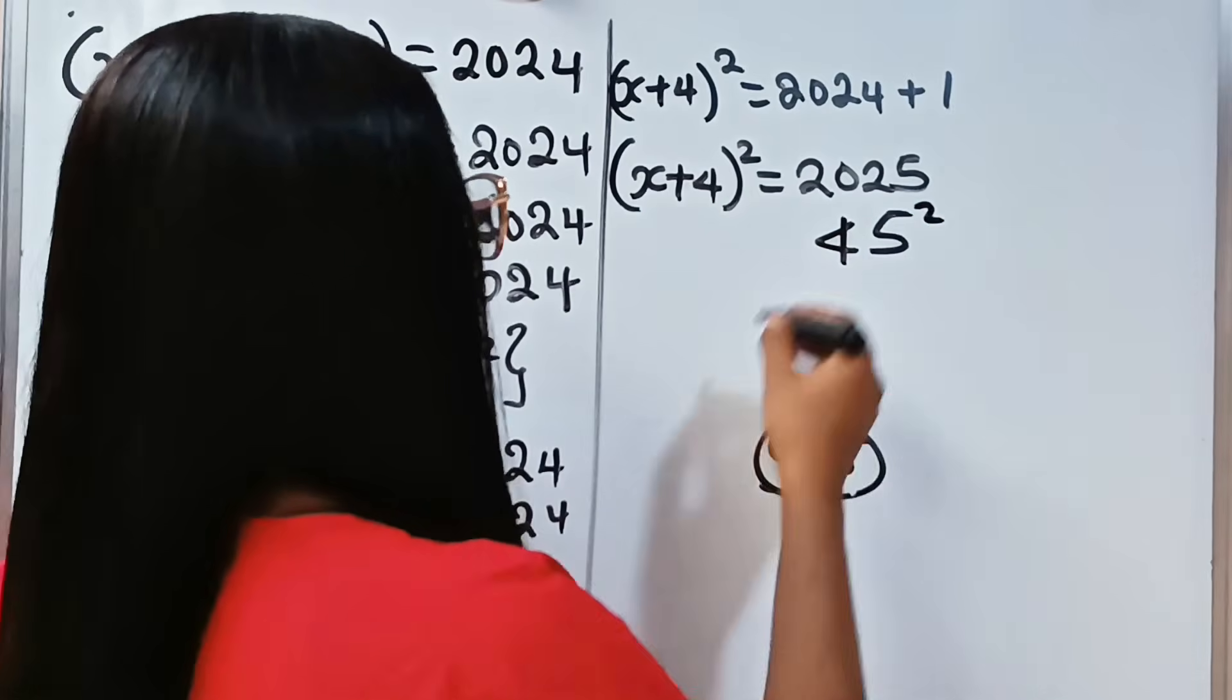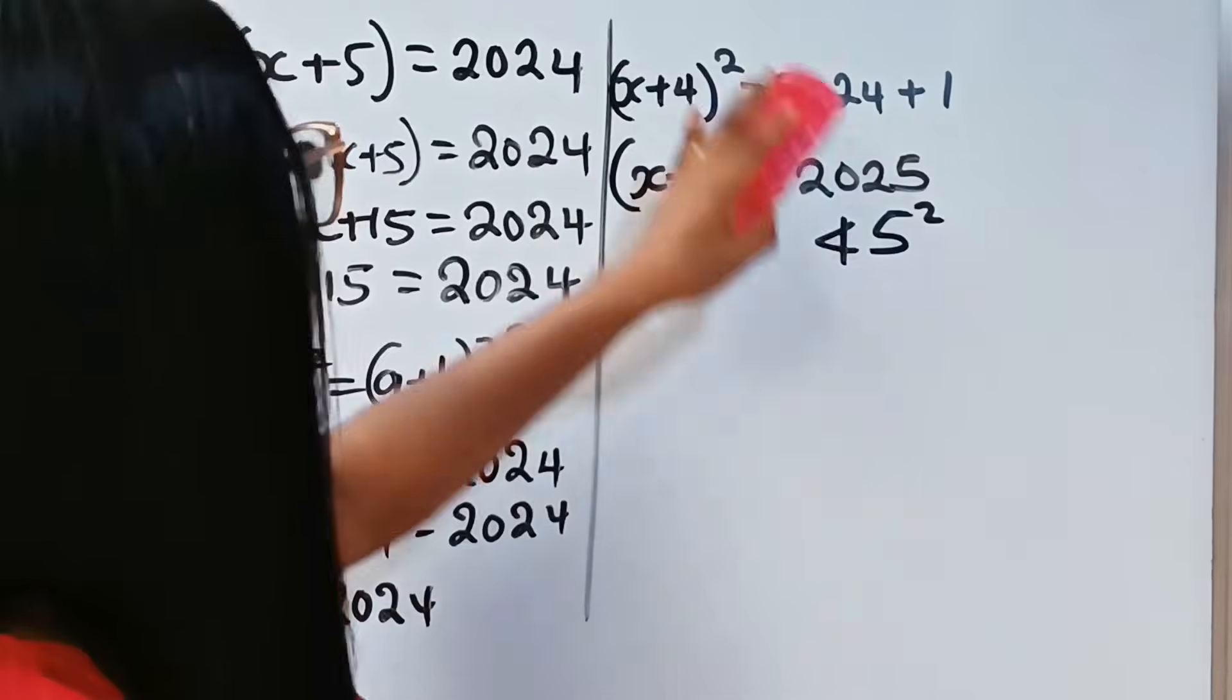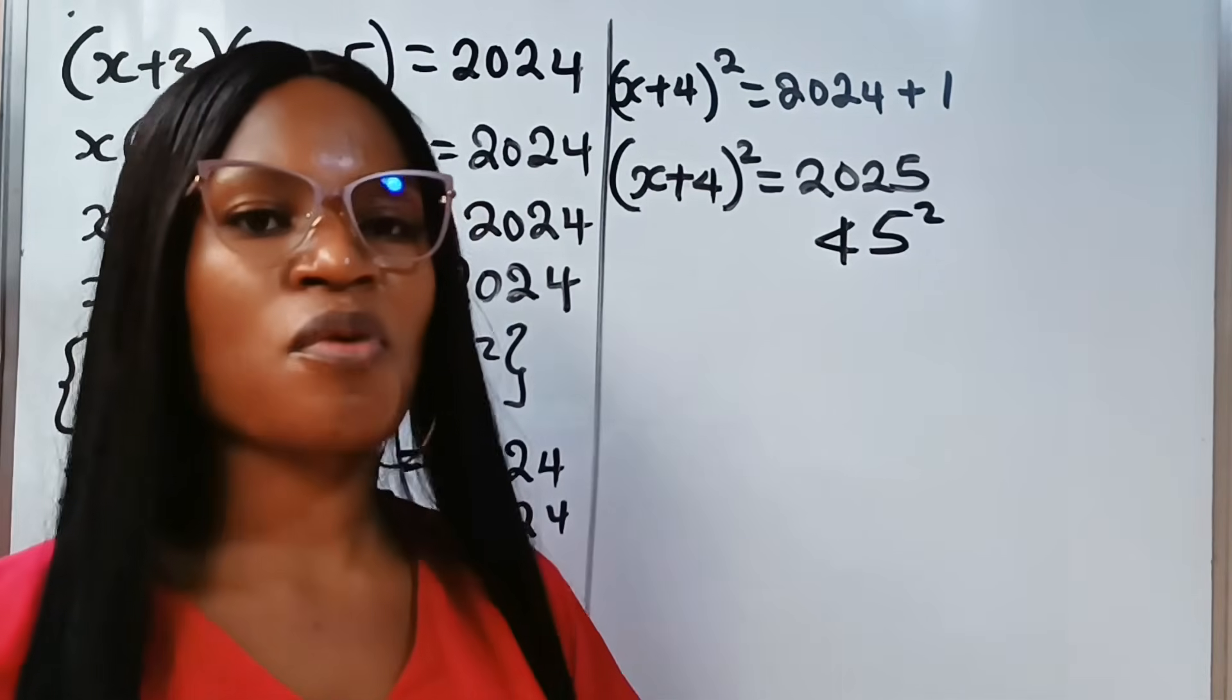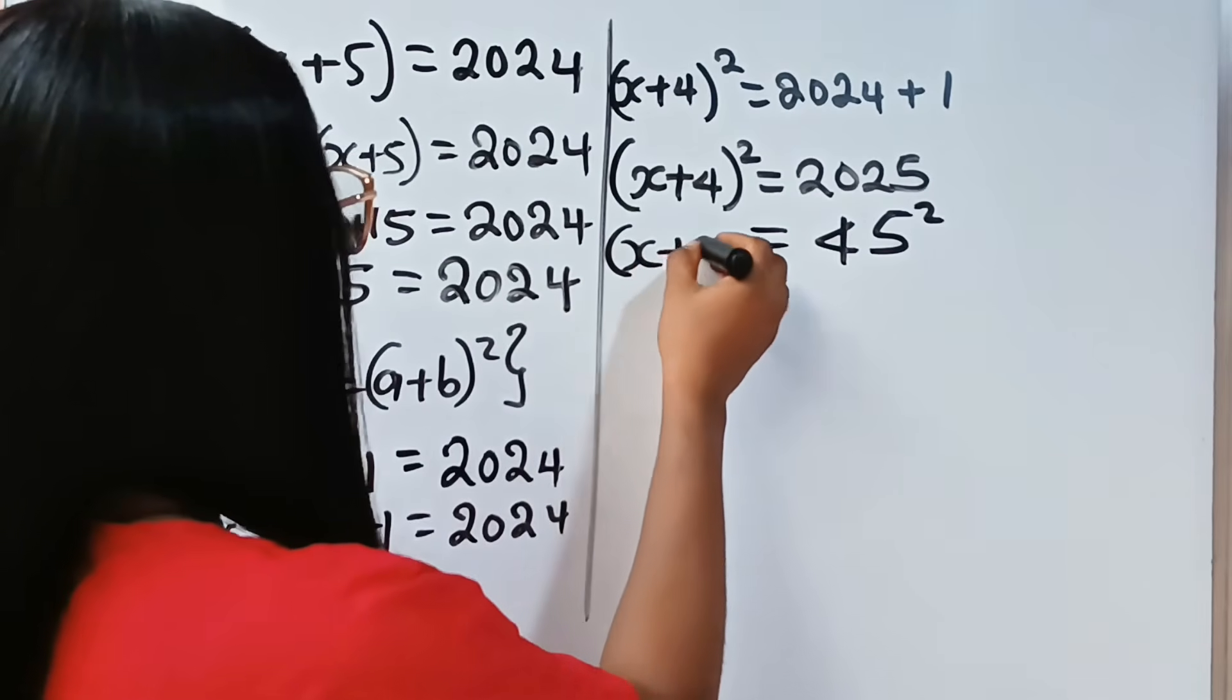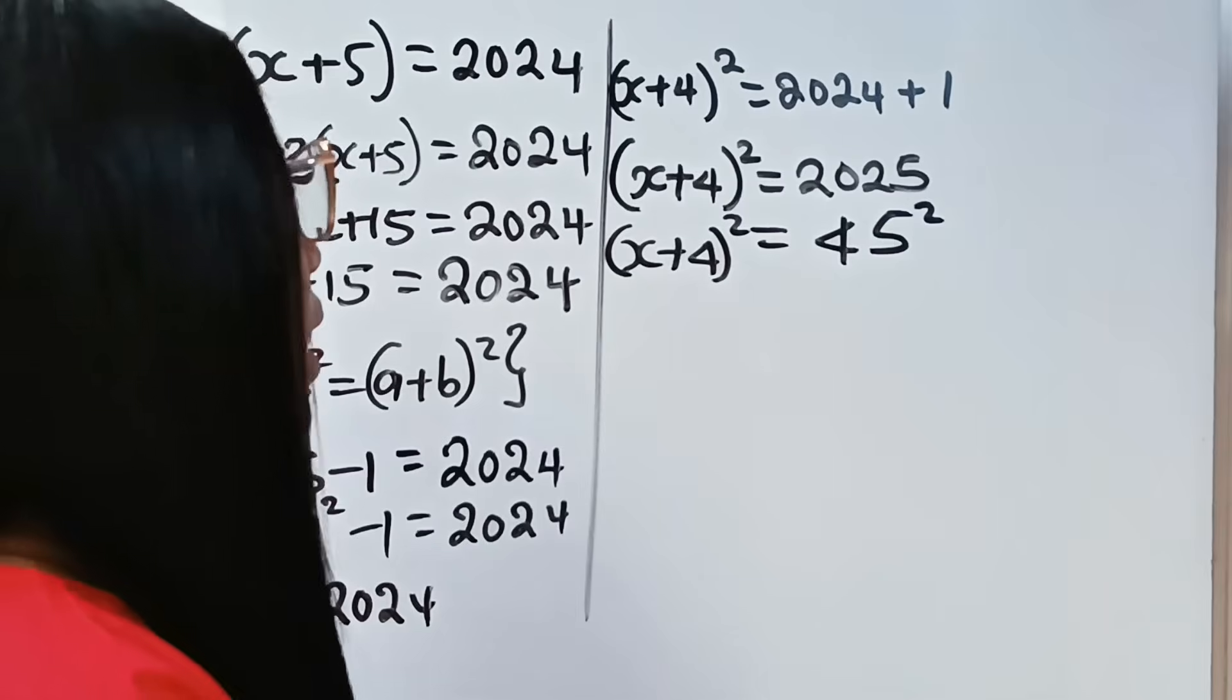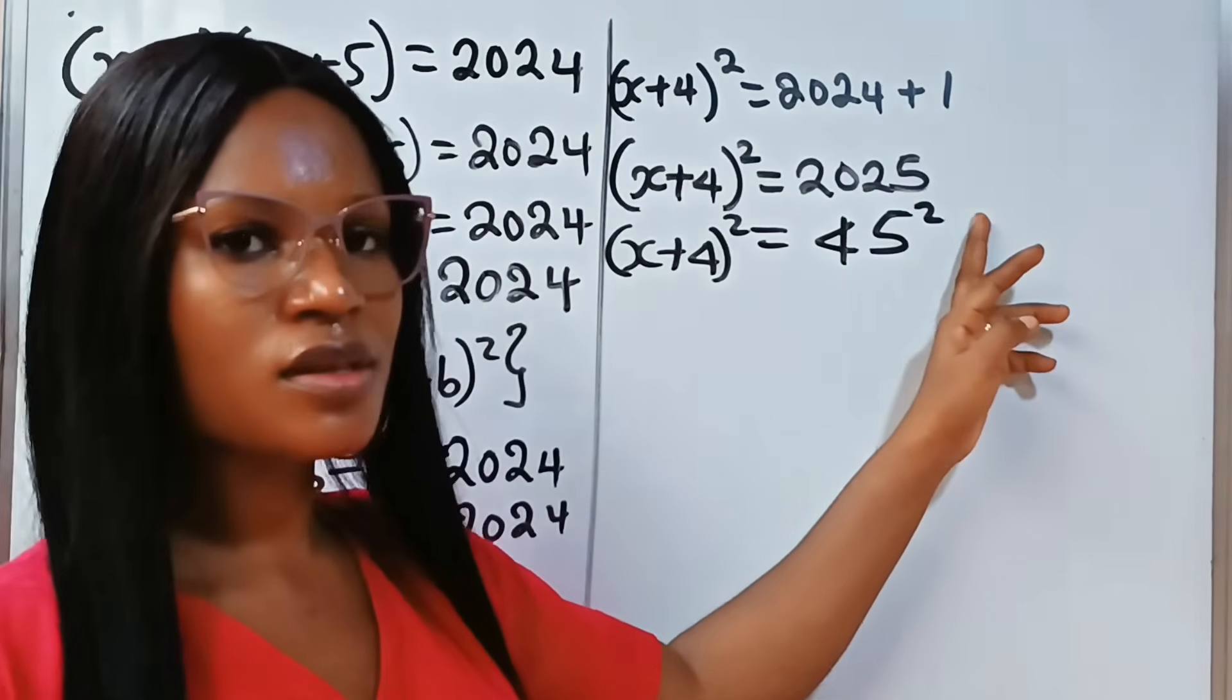This is 45². You may not understand how I did it, but just check the playlist or my shorts for more clarity. Now, this equals (x + 4)².